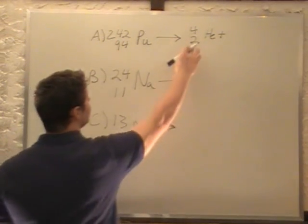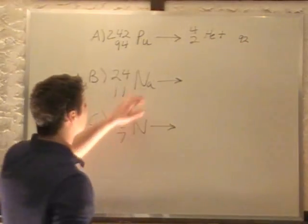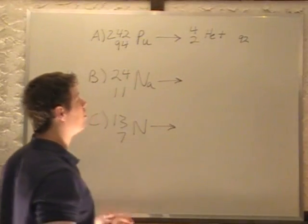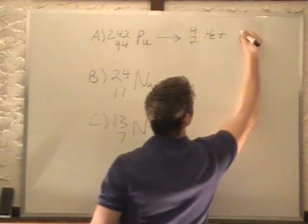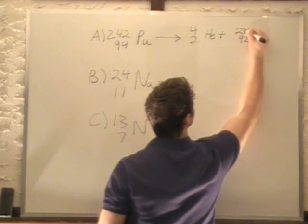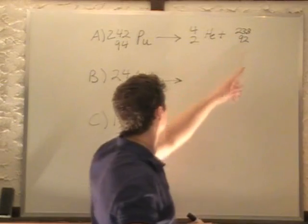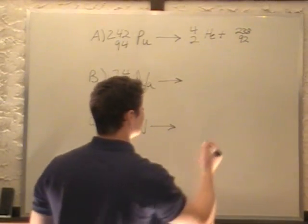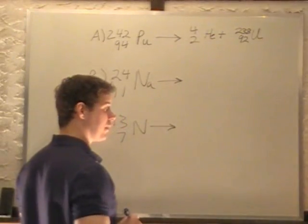So we lose a total of two protons, giving us 92, and we lose a total of four particles, neutrons and protons, to give us 238. And 92 is what determines what this element is, 92 is uranium. We look at our periodic table, so that's our answer for that one.